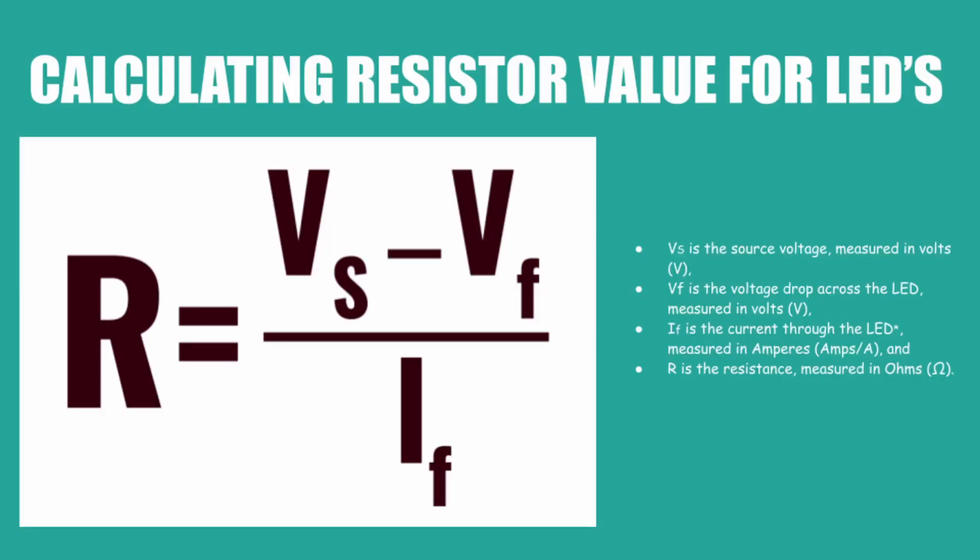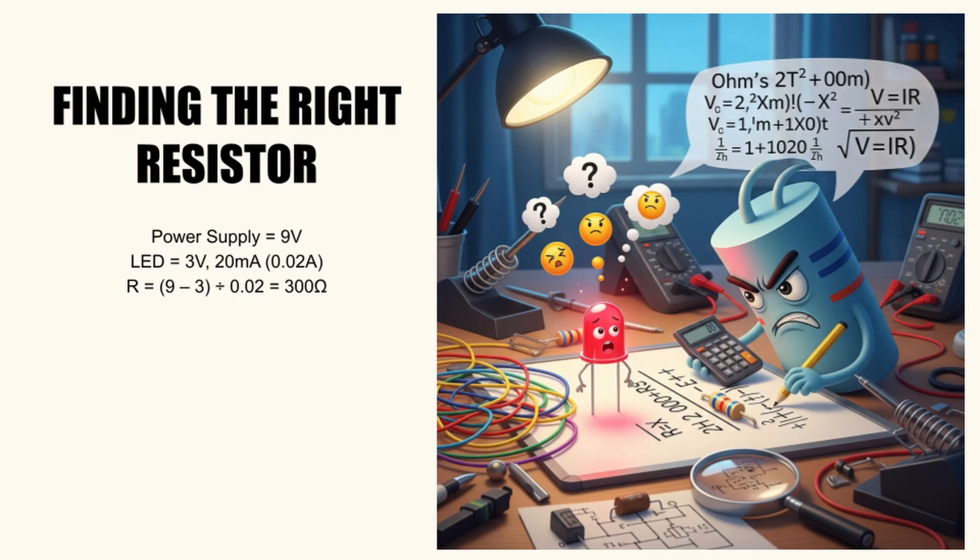Whoa, this looks complicated, right? R equals VS minus VF divided by IF. That might feel like math from another planet. I get it. This is exactly why so many modelers get intimidated by lighting. But here's the thing, you don't need to be a mathematician. We're going to take this seemingly complex formula and break it down into simple step-by-step calculations that will make figuring out the right resistor for your LEDs feel easy.